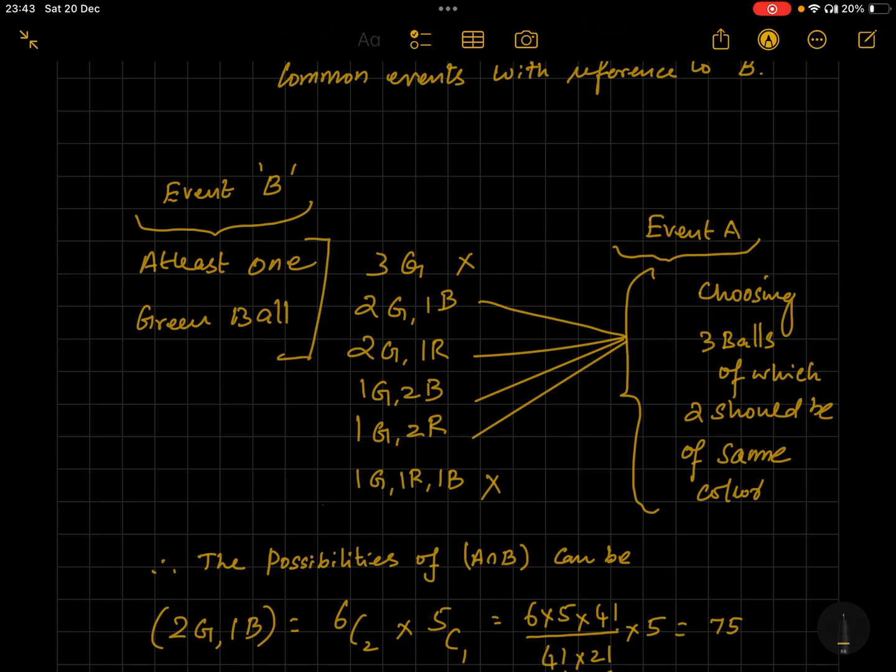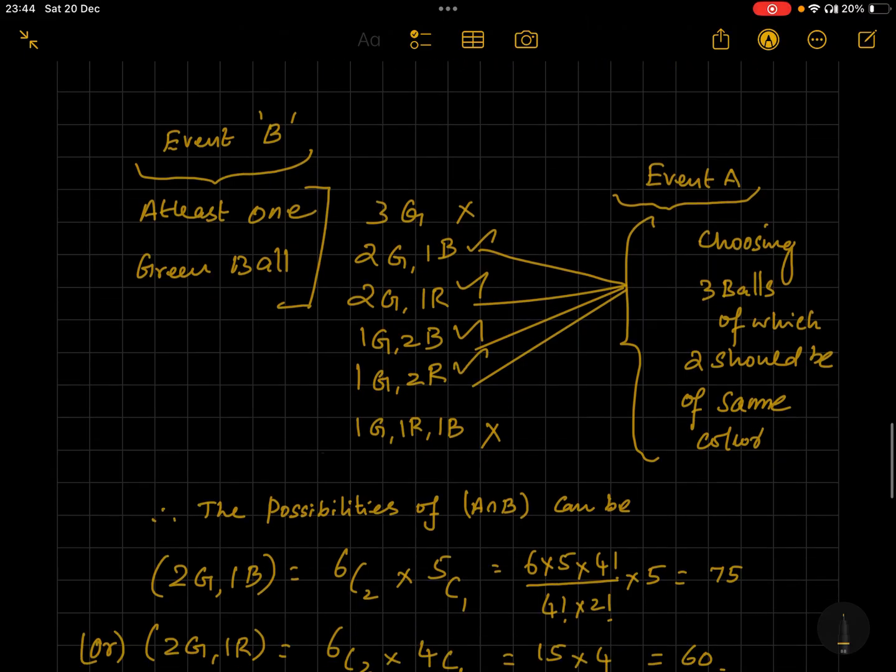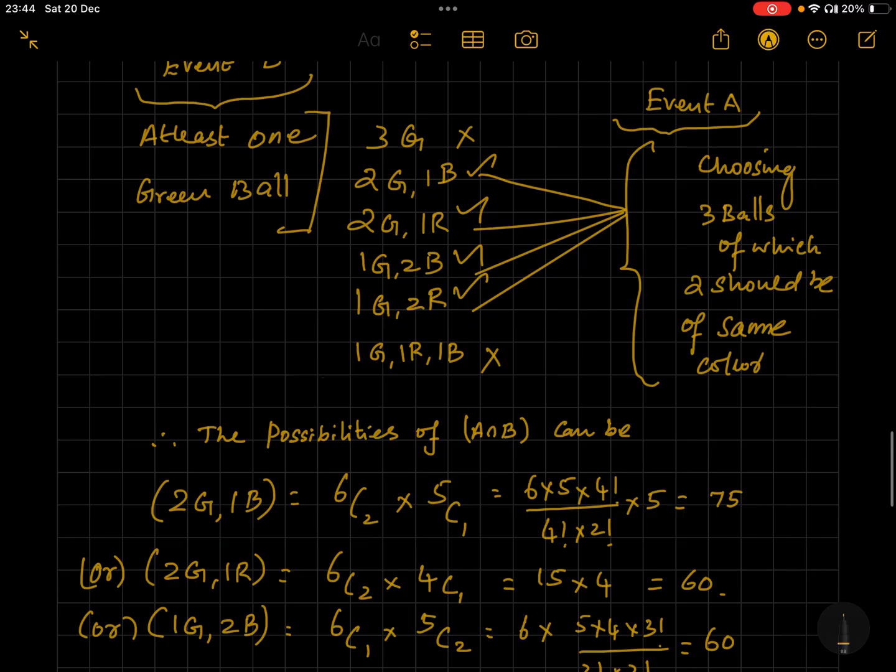However, all these things may not map with event A, because event A's constraint is choosing three balls of which two should be of the same color. So three green balls doesn't satisfy because all are the same color, so exclude it. Two green and one blue, okay. Two green and one red, okay. One green two blue, okay. One green two red, okay. And one green one red one blue is not okay because all are different colors.